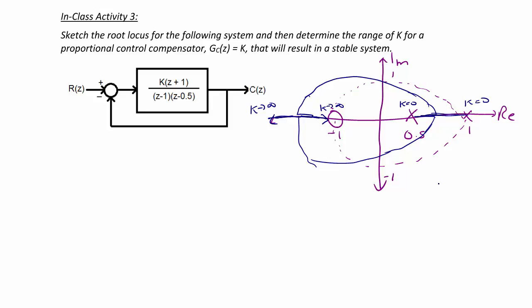So next we'll mark some points on here by first doing the same bilinear transformation that we did before. If our closed loop transfer function t of z is k times z plus 1 over z minus 1 times z minus 0.5 plus k times z plus 1.